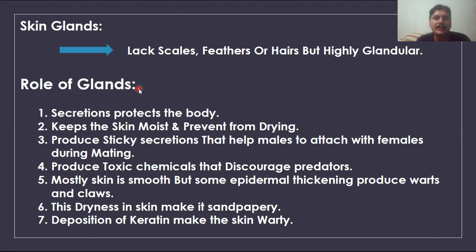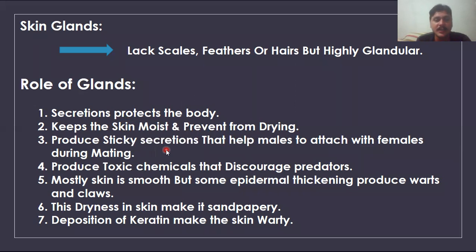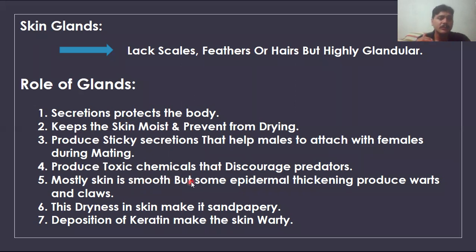The skin glands play multiple roles. They secrete sticky secretions that protect the body, keep the skin moist, and prevent drying. They also produce sticky secretions helpful for the mating process — for example, during amplexus when a male attaches to a female in frogs. The glands also produce different toxic chemicals. Looking at structure, toads have warty, rough epidermal surfaces, while salamanders and frogs have smoother skin.